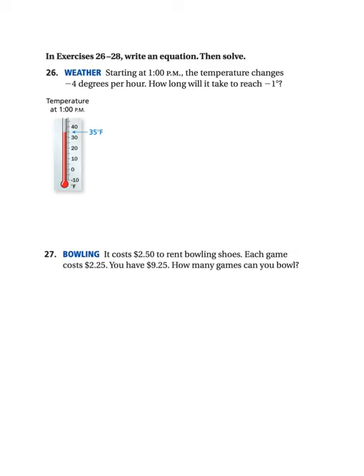For these next few, we are going to write an equation and then solve. So, starting at 1 p.m., the temperature changes negative 4 degrees per hour. How many hours will it take to reach negative 1 degrees? So, we're looking for hours. I'm going to say let H equals hours.